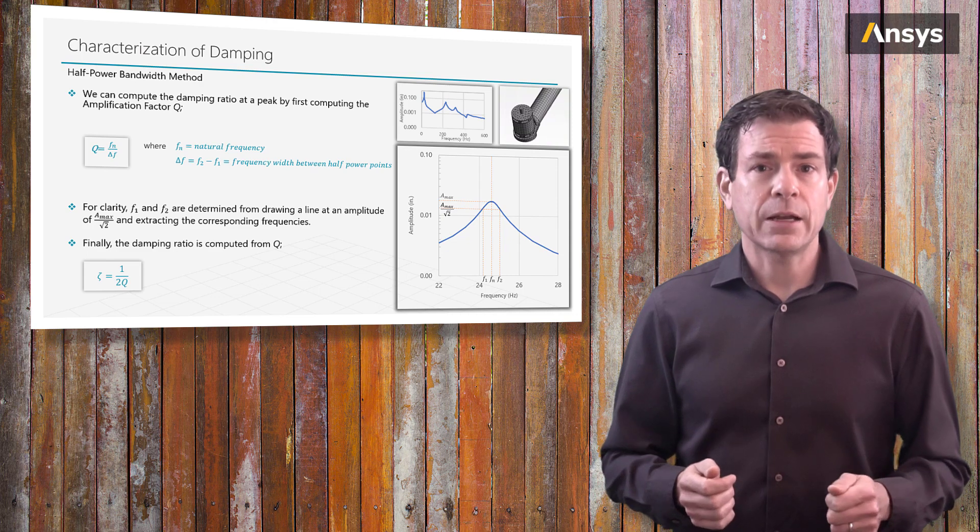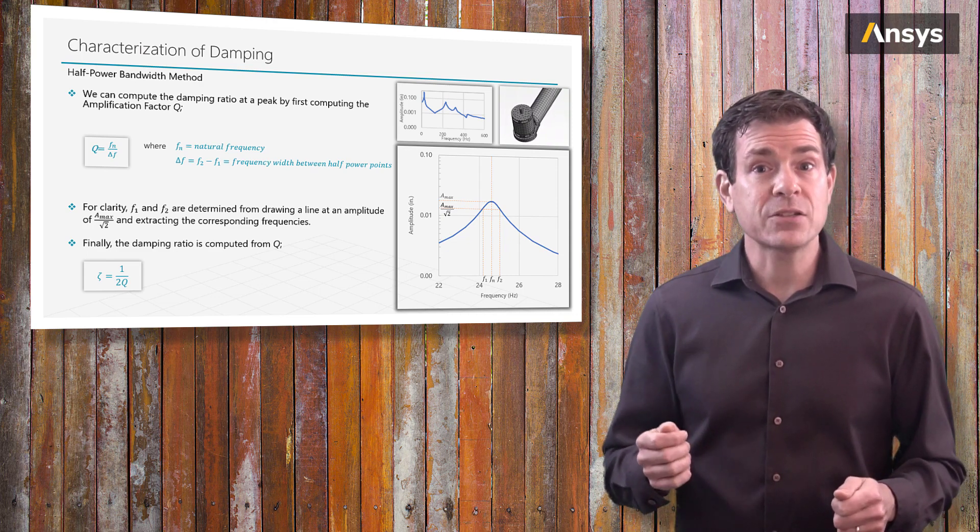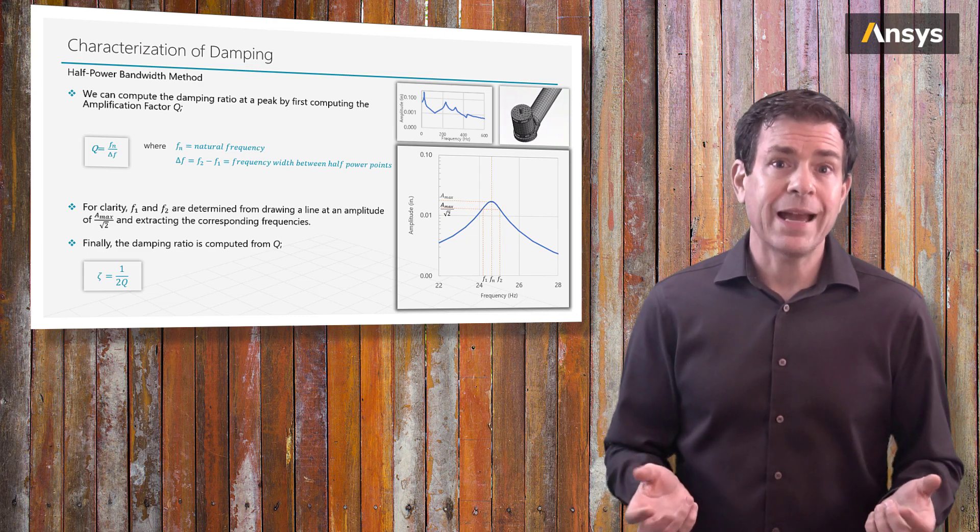Moving on to other methods to characterize damping, let's discuss the important case of the behavior of elastomeric or rubber-like materials. Elastomeric materials have damping that typically varies with frequency, so we will not have a single value over the frequency range.